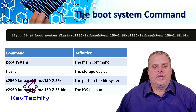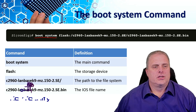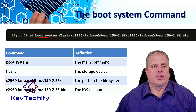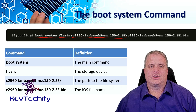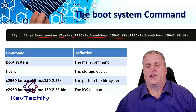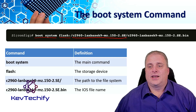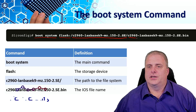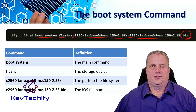To set the boot variable, we use the command boot system in global configuration mode. We type boot system, then tell it the storage device — in this case, flash. If it's stored in a directory, we put that between two forward slashes. Here the directory is c2960-landbasek9-mz.150-2.se, and then after that is the file name, which in this instance is the same as the directory but ends in .bin. The .bin extension signifies it is a binary file to load into memory.